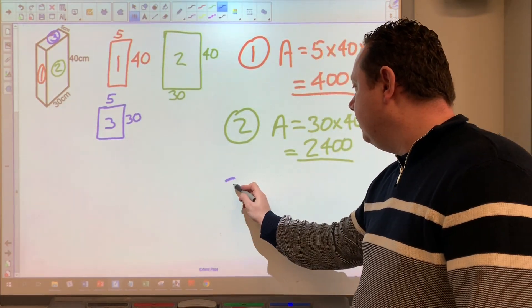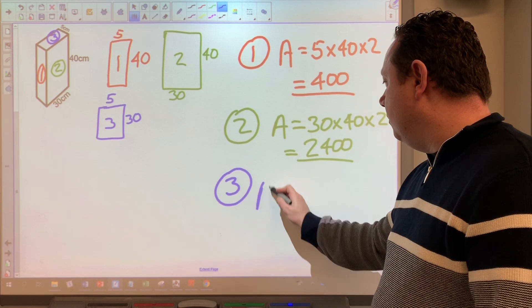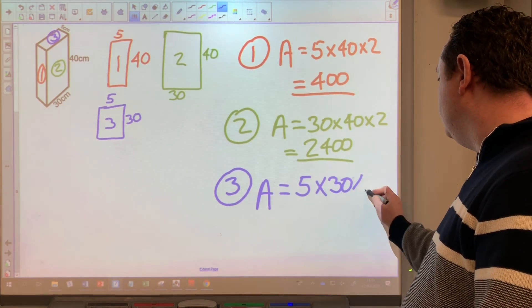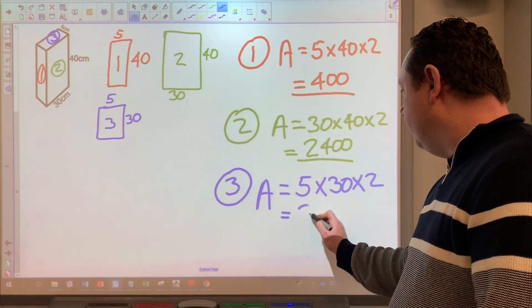And then for number three. The area of number three is just five times 30. And you've got two of them. So I'm doubling that. So that's 300.